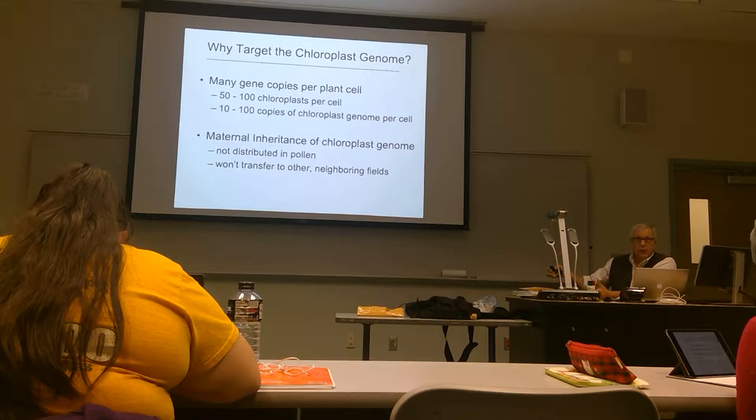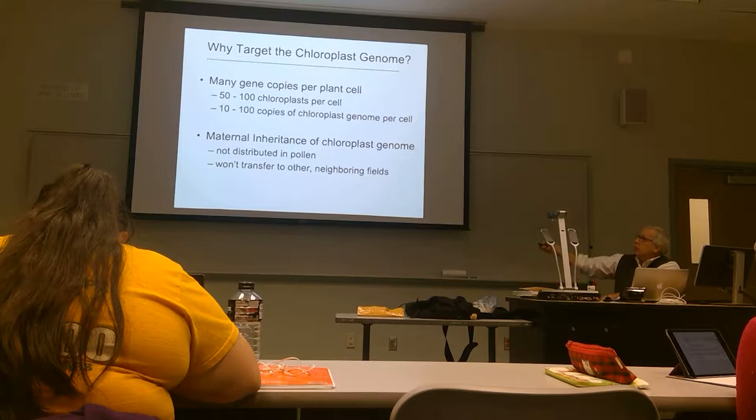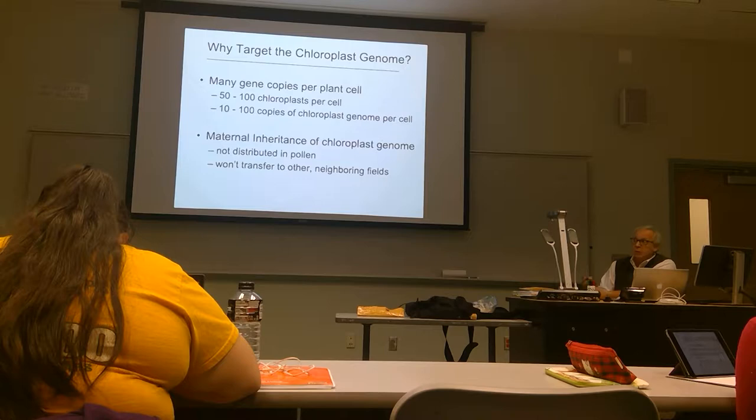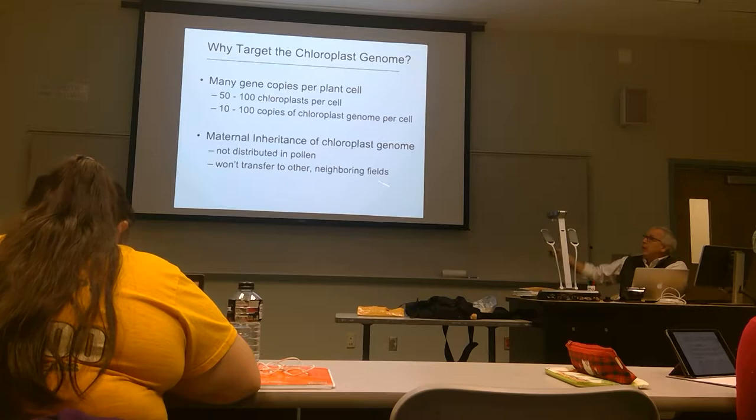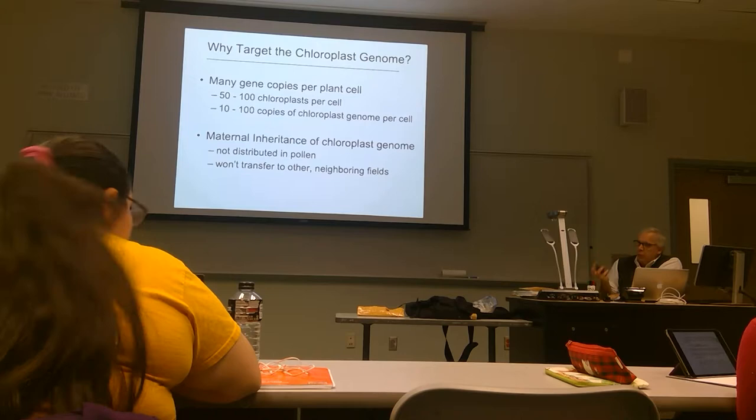If you take even the lower level — 50 chloroplasts, 10 copies per chloroplast — you've got 500 copies of your gene. If you go at the high end, 100 times 100 is 10,000. So 10,000 copies of your gene should give you a pretty high level of expression — probably too much. So copy number is one big advantage.